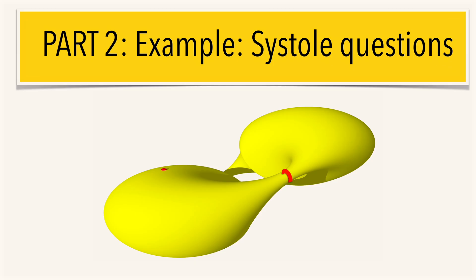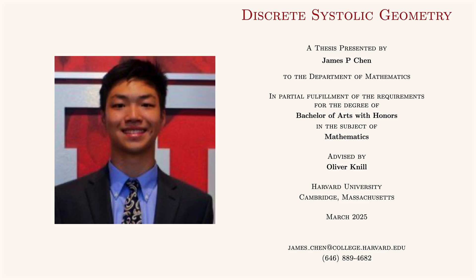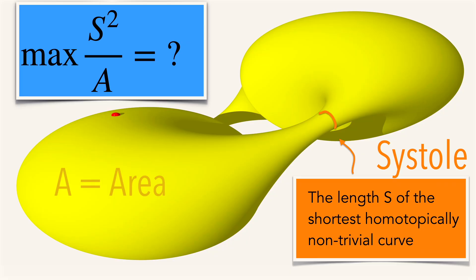In part two, we look at some systolic questions. I want to show some work of James Chen, who worked on discrete systolic geometry.